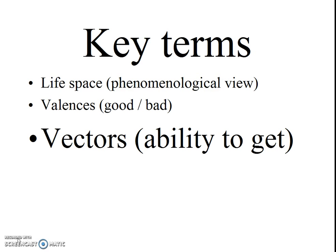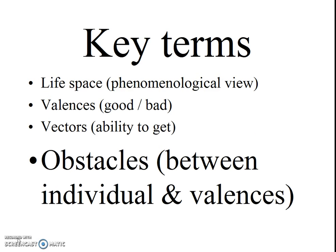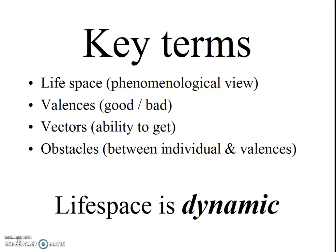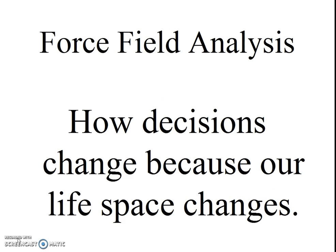There are also vectors — these are opportunities, strengths, weaknesses, your ability to get what you want. There are also various obstacles, things that are between the individual and the valences. The important thing to remember about the life space, according to Lewin, is that it is very dynamic, always changing.